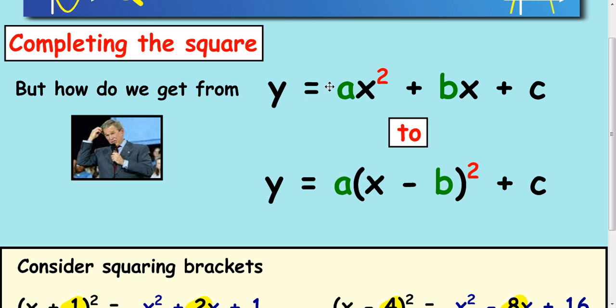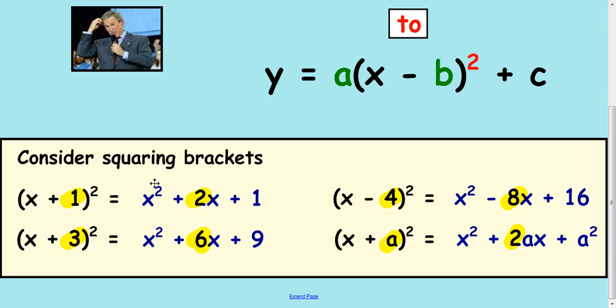OK, so let's look at how to get from this form to this form. This is what completing the square is. So we have a look at the bottom. If I consider squaring these brackets out (x + 1)², then I get x² + 2x + 1. This will give me a 1x and another x when you multiply it out and then the plus 1 at the end.